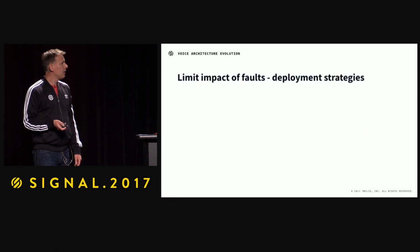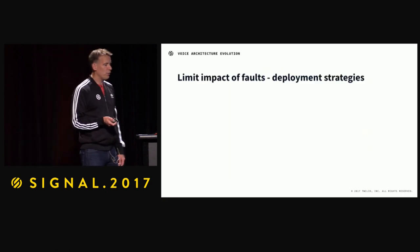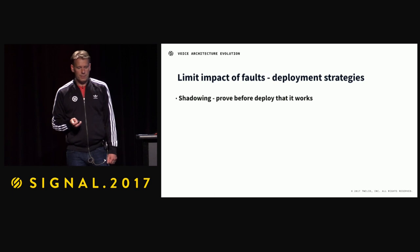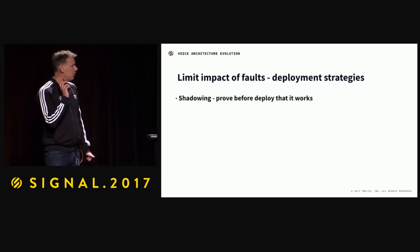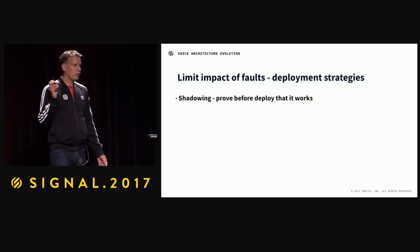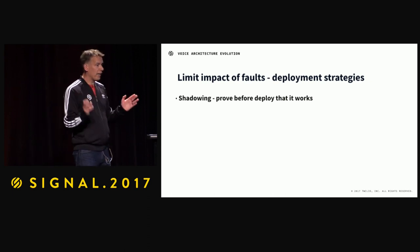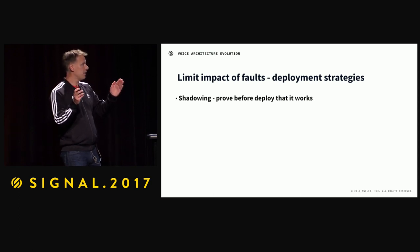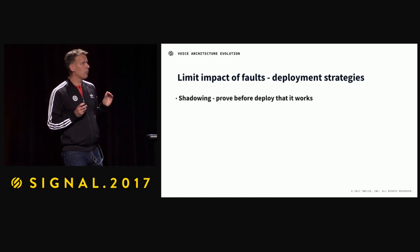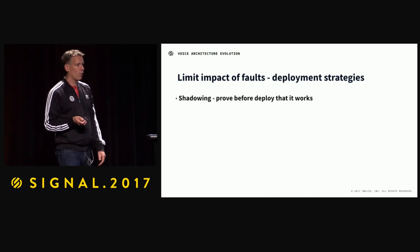So how do we limit that? We limit the impact of faults by using different deployment strategies. Shadowing is super important: you send traffic and do on-the-job training for the new service. You send traffic to both services, but only the current one actually wins and gets used. But you can compare the results and prove it works beforehand.